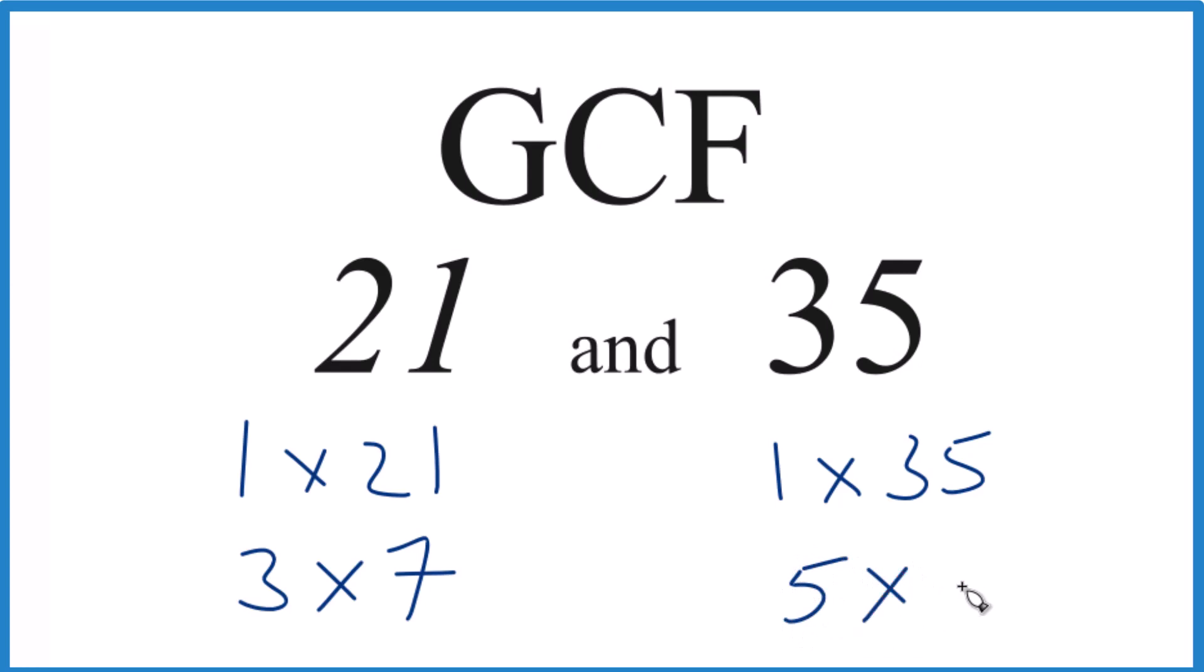Those are the only factors for 35. Now we want to find the greatest common factor. 1 is a common factor, but the greatest common factor is 7. That's the greatest number that goes into both 21 and 35.